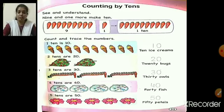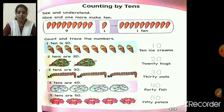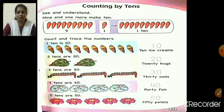Two 10s are 20. Two 10s means two beetle leaves. You can see two beetle leaves in the picture. We have 10 berks on the first beetle leaf and 10 berks on the second beetle leaf. So 10 plus 10 is 20. Two 10s are 20 — trace 20.